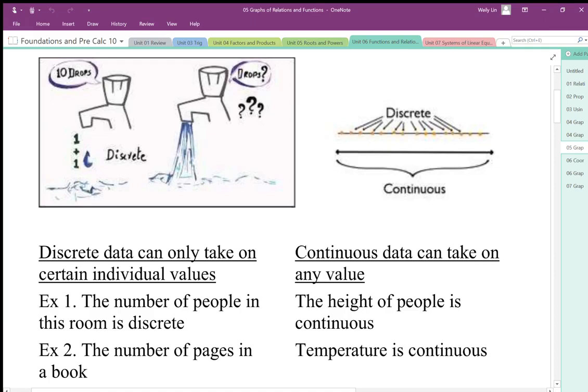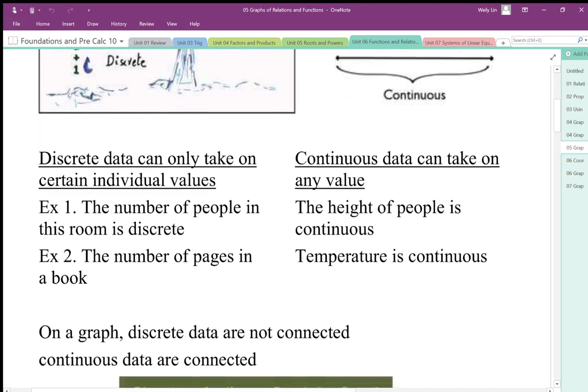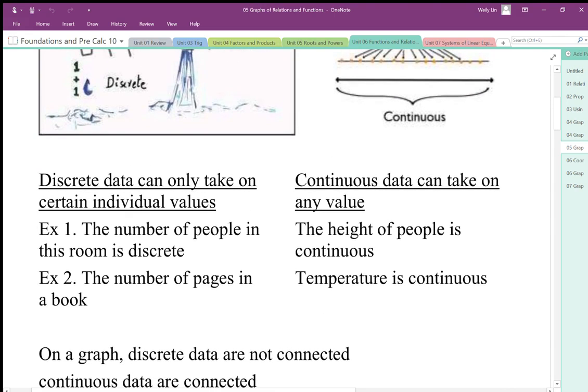Some examples of discrete variables would be the number of people in a room, the number of pages in a phone book or in a book. We can't have 14 and a half pages in a book.